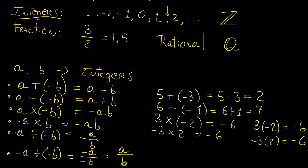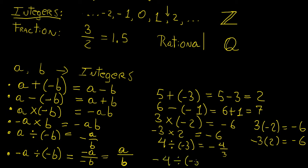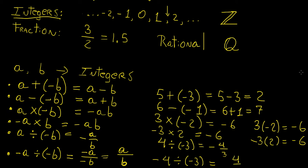Now let's do this example. Let's say we have 4 divided by minus 3 — that's going to give minus 4 over 3. And for this one, let's say we have minus 4 divided by minus 3. Because both signs are negative, they're going to become positive, so this is going to be positive 4 over 3.